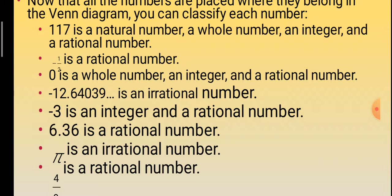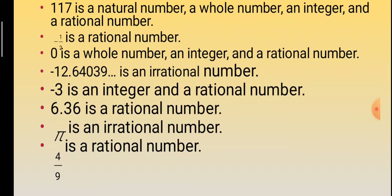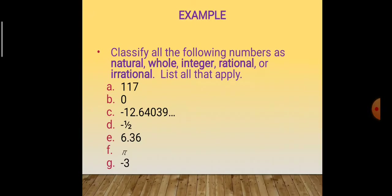Next: -3. It is an integer and a rational number. Next: 6.36. It is a rational number. Next: pi. Pi is an irrational number. Next: 4/9 is a rational number.